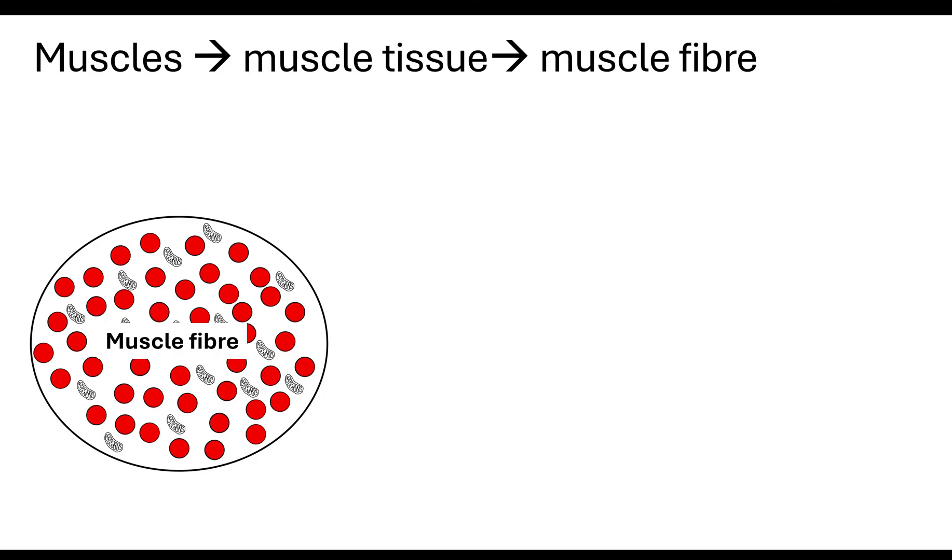Because we know the muscle fibre is a cell, we know that it has a plasma membrane. Now we don't call it a plasma membrane, we call it the sarcolemma. So when we're looking at the muscle fibre, the sarcolemma is the membrane which is surrounding the muscle fibre.